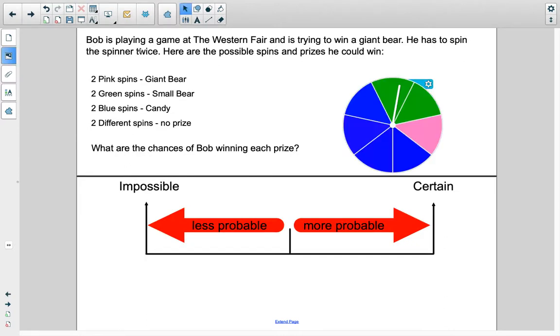So let's say this fellow named Bob is playing a game at the Western Fair and is trying to win a giant bear, one of those giant stuffed bears. He has to spin the spinner twice, and depending on what he gets, he can win the prize. Here are the possible spins and prizes he could win.